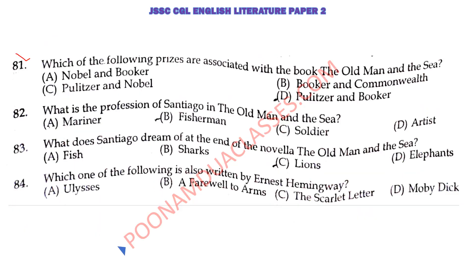Next question, question 81: which of the following prizes are associated with the book The Old Man and the Sea? The right answer is Nobel and Pulitzer. Pulitzer Prize 1953 and Nobel Prize 1954. Although the Nobel Prize is not given for a particular work, it is kind of a lifetime achievement award, and the most excellent achievement was the writer's book. That's why he got the Nobel Prize in Literature in 1954.